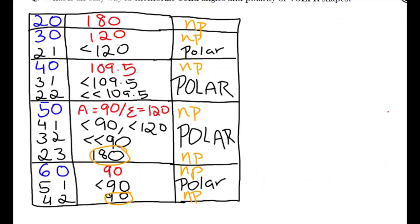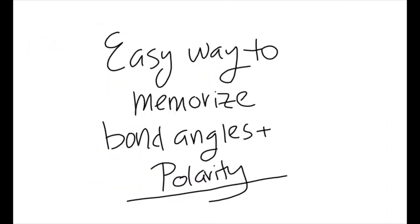Therefore, all the remaining rows are polar. I hope this video helped you to use an easy way to memorize bond angles and polarity of VSEPR shapes.